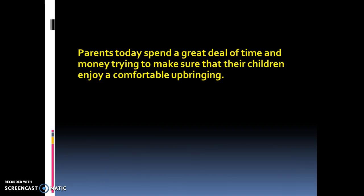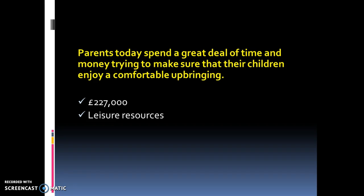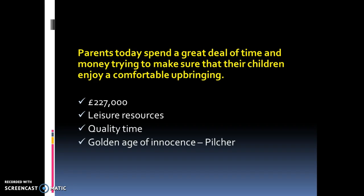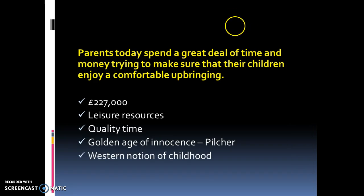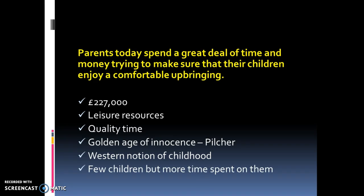For example, from the item you could have chosen that parents are spending more time and money so children have a comfortable upbringing. You could link in key concepts such as the £227,000 spent on children, spending leisure time together — so there's more family time. You could link it into the symmetrical family where leisure time is a whole-family thing, quality time together. You could link into the golden age of innocence, protection from harm, wrapping them up in cotton wool. You could link into Postman's study, or say it's very much a Western idea of childhood — that you spend a lot of money on your children. And this idea that you have fewer children but spend more time on them could inform your analysis. Historically, in the past children were seen and not heard, whereas now we've got a totally different attitude towards children.